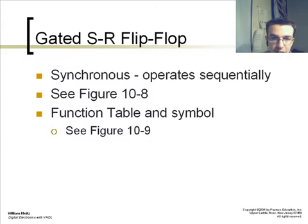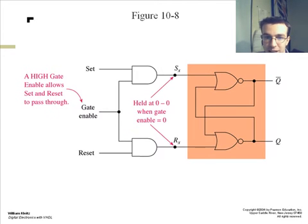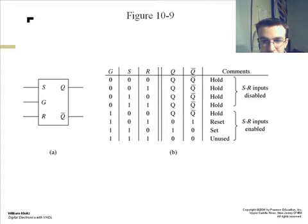There's another type of set reset flip-flop called the gated set reset flip-flop. This is a synchronous device which operates sequentially. This is seen in figure 10-8 here. With a gate enabled pin a high gate enable allows set and reset to pass through. This is shown through the truth table and to the left and figure A is the diagram for that same chip.